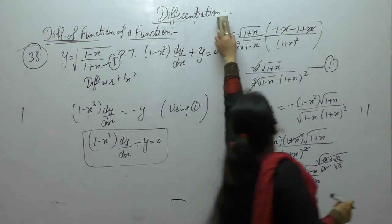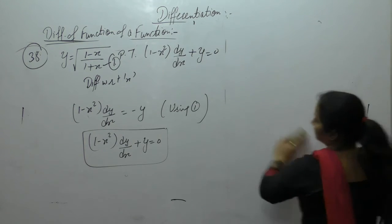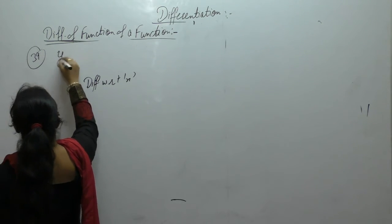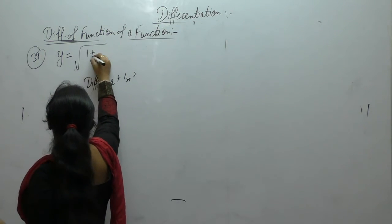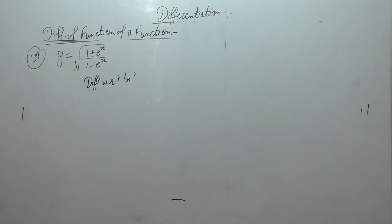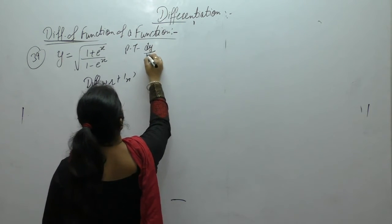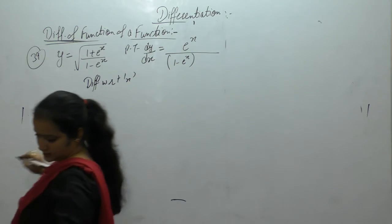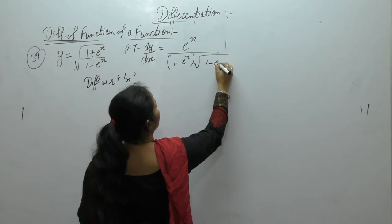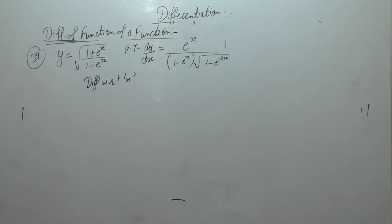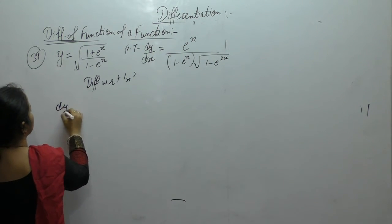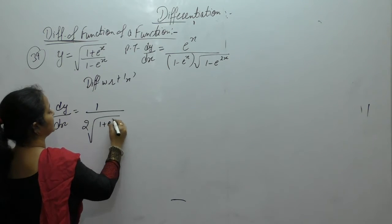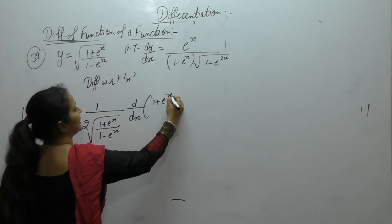Next problem: y equals √((1 plus eˣ) upon (1 minus eˣ)). Show that dy/dx equals eˣ upon (1 minus e²ˣ). Now differentiate with respect to x. Derivative of √x is 1 upon 2√x. Now take the derivative of the inner term.